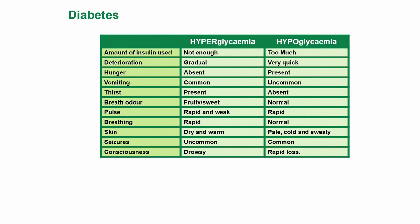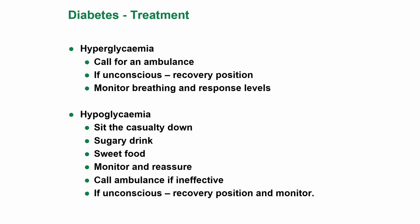Diabetes: there are two types — hyperglycemia (too much sugar) and hypoglycemia (too little sugar). For hyperglycemia, call for an ambulance; if unconscious, put them in the recovery position and monitor breathing and response levels. For hypoglycemia, sit the casualty down, give them a sugary drink and sweet food, monitor and reassure, and call an ambulance if ineffective. If unconscious, put them in the recovery position and monitor closely.